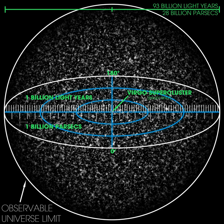A subtlety is that, because the Hubble parameter is decreasing with time, there can be cases where a galaxy that is receding from the Earth just a bit faster than light does emit a signal that eventually reaches the Earth. This future visibility limit is calculated at a co-moving distance of 19 billion parsecs, assuming the universe will keep expanding forever, which implies the number of galaxies that we can ever theoretically observe in the infinite future is only larger than the number currently observable by a factor of 2.36.